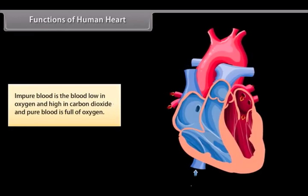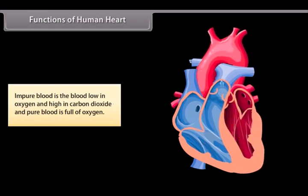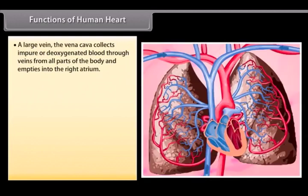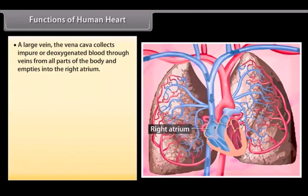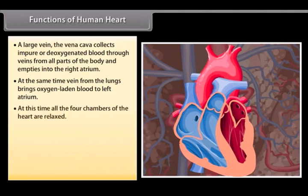Functions of human heart. Impure blood is the blood low in oxygen and high in carbon dioxide and pure blood is full of oxygen. A large vein, the vena cava, collects impure and deoxygenated blood through veins from all parts of the body and empties into the right atrium. At the same time, vein from the lungs brings oxygen-laden blood to left atrium. At this time, all the four chambers of the heart are relaxed.